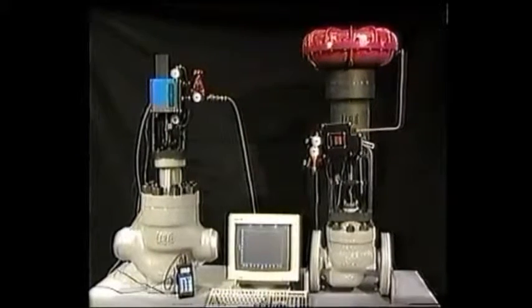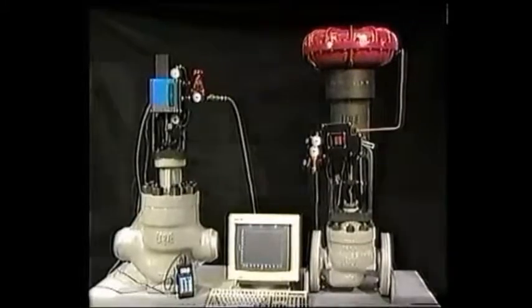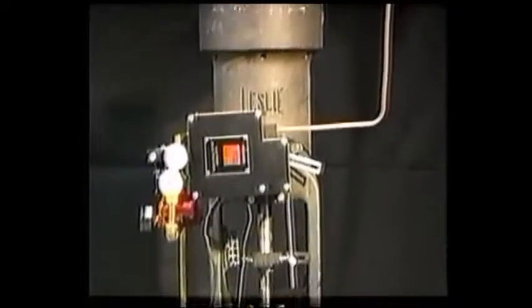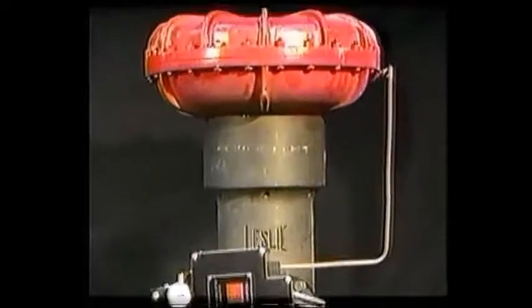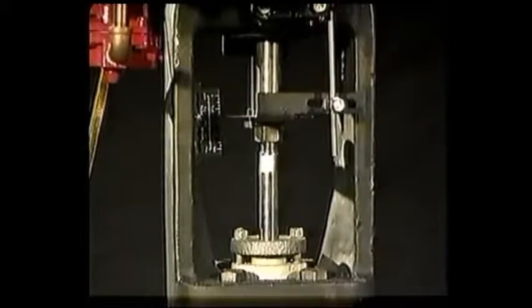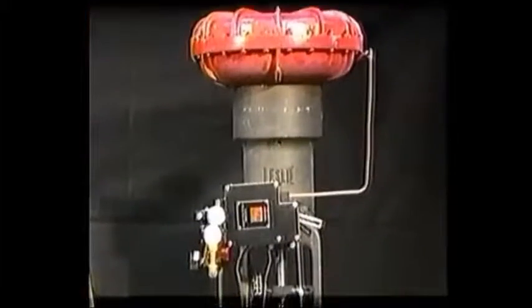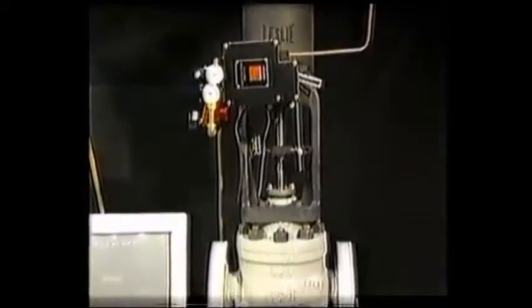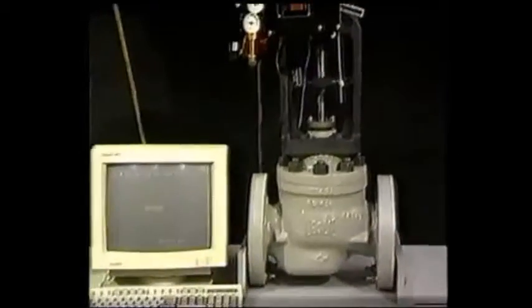On the right is a traditional balanced valve based on technology originating in the 50s and carried through to today. Key elements include a balanced trim, mandating a given stem and in-turn actuator size to deal with force imbalances, and a mechanical positioner. From any given manufacturer, the design configuration will be nearly identical, and therefore the installed performance will be consistent.